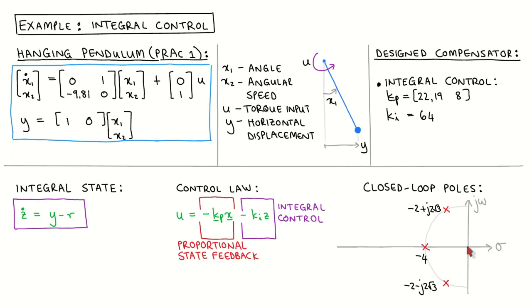Let's now look at the structure of the compensator with integral control. For integral control we add a state which we call z. The derivative of this integral state is defined as the difference between the plant output and the reference input. With this definition, the control law says that the plant input is calculated as minus the proportional gain vector times the plant states minus the integral gain times the integral state. Note that here we make the unrealistic assumption that the plant states are available for feedback, which we will relax later in this video.